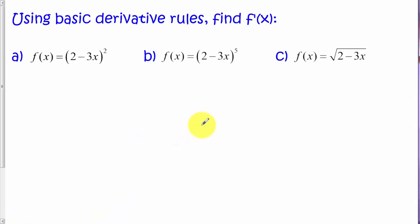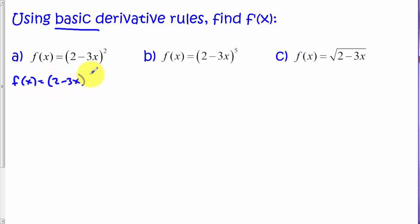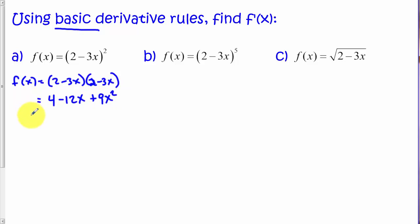To help understand the rule and the need for the rule, let's look at a couple problems similar to what we've worked recently, and let's look at how we would do these just using our basic rules — the power rule and the constant rule. Remember when we were doing problems like this, we would have to rewrite this, and we could either use the product rule or foil it out. Either way, we get negative 12x plus 9x squared. That's still f of x, and if we apply our derivative rules, we would have negative 12 plus 18x.